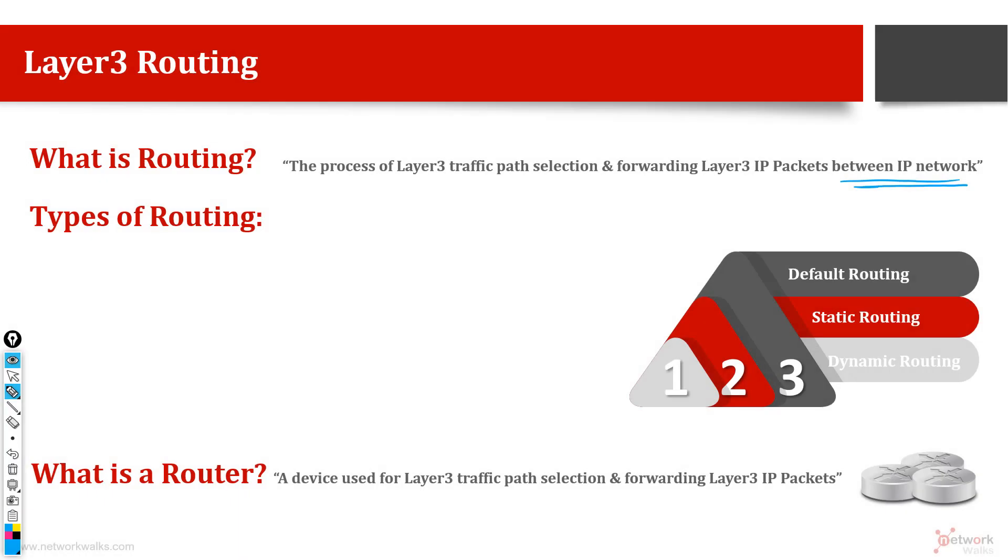Okay, so what is Layer 3 routing? What is IP routing? Let me answer this question. This is the process of Layer 3 traffic path selection and forwarding of Layer 3 IP packets between different IP networks. This point is very important: it is not within one network, it is between different networks. It is the process of sending packets from one host on a network to another host on another network.